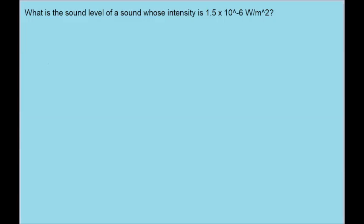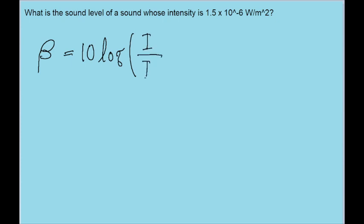In this problem, we're given the intensity of a sound, and we want to find out what the sound level is. The formula for sound level, beta, says that it's equal to 10 times the logarithm with a base of 10 of the intensity of that sound divided by the threshold of hearing, which has a constant value of 1 times 10 to the power of negative 12 watts per meter squared. I'll write that down right here: I-naught is equal to 1.0 times 10 to the power of negative 12 watts per meter squared.